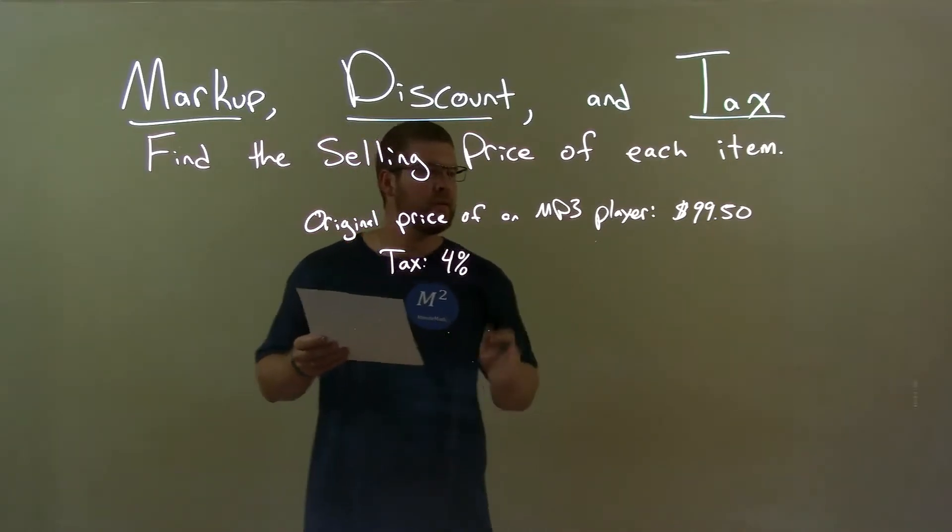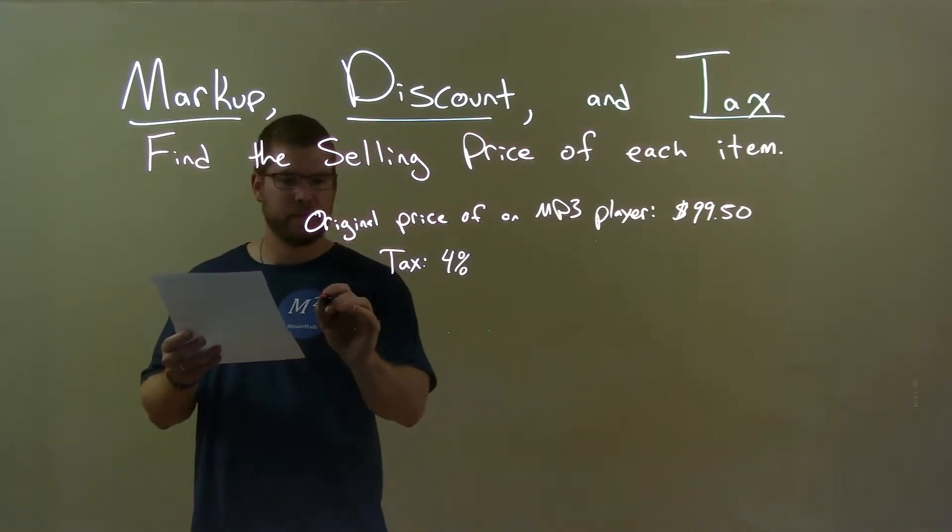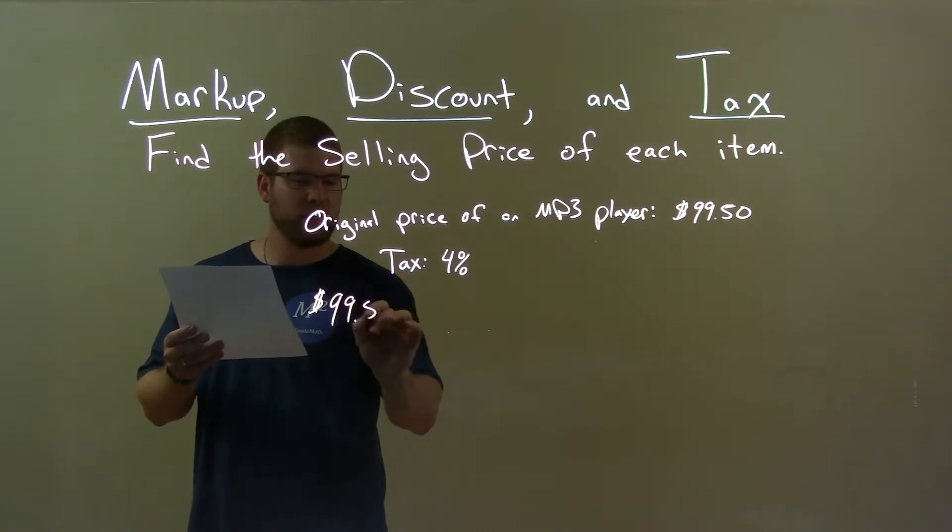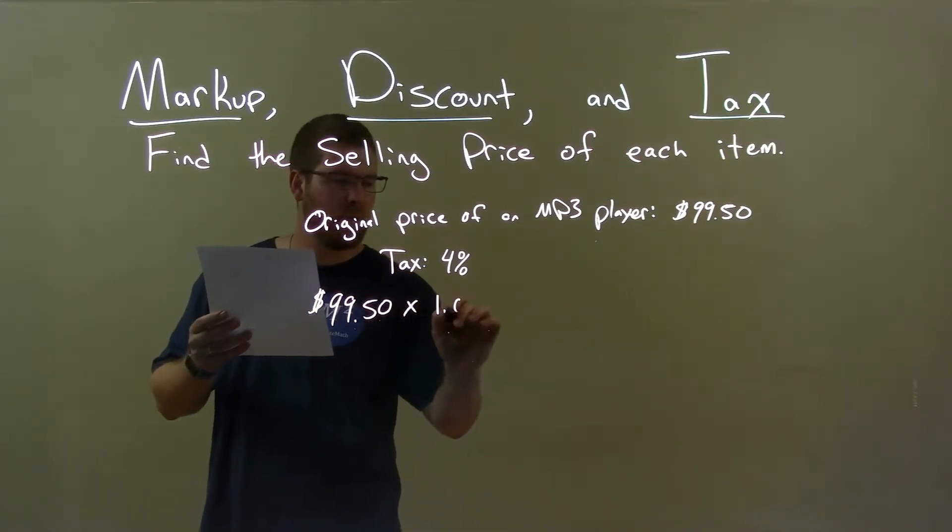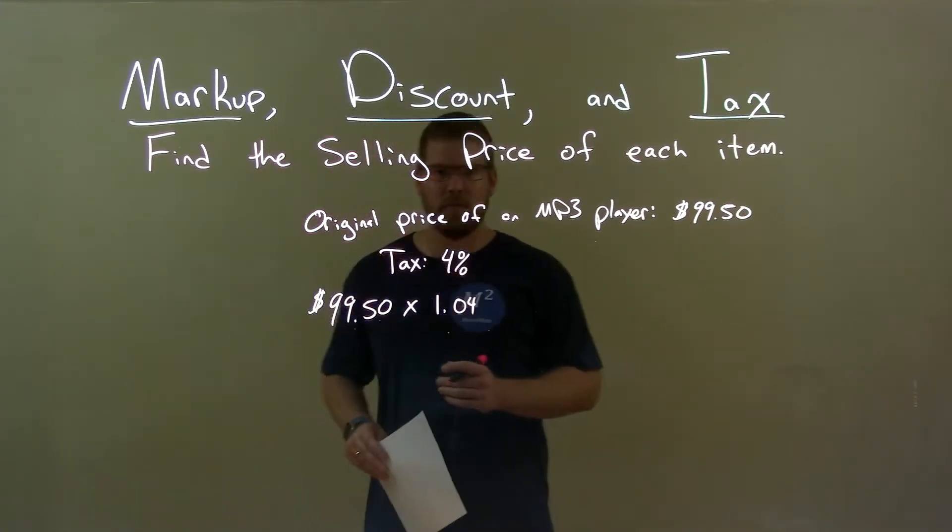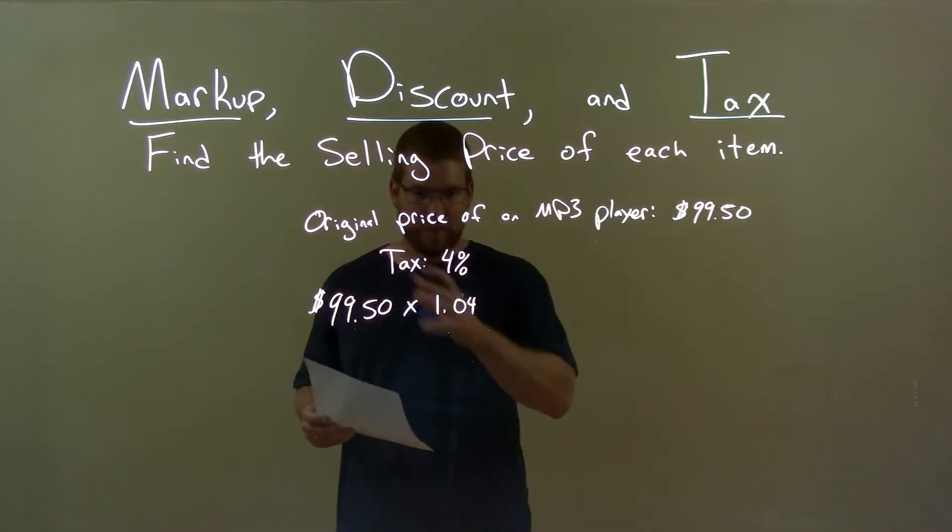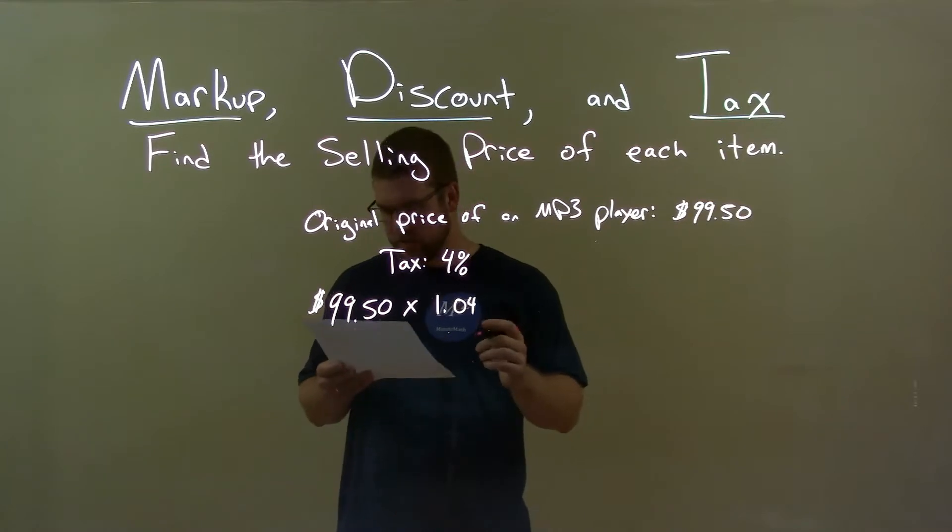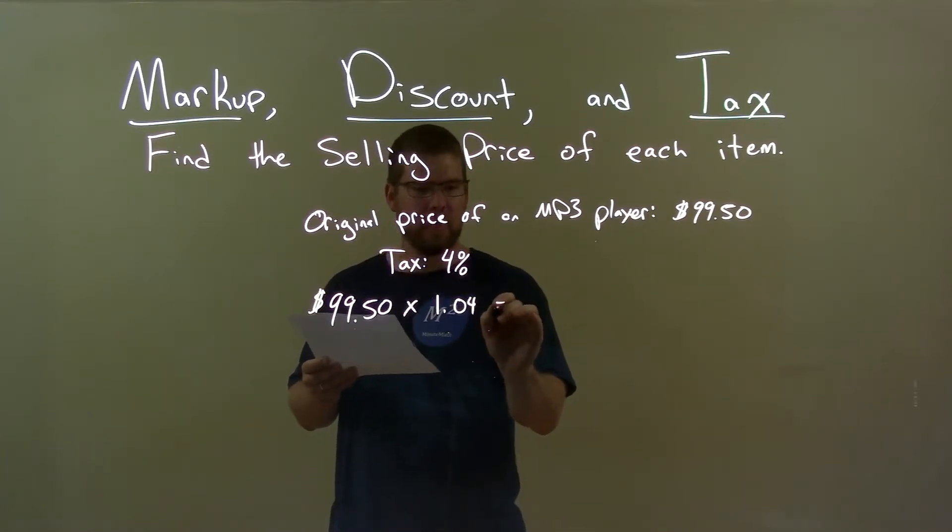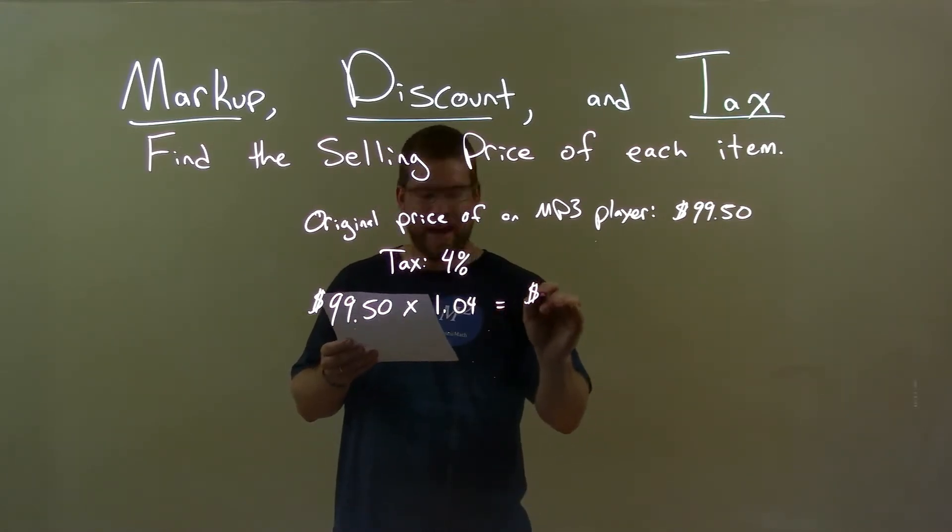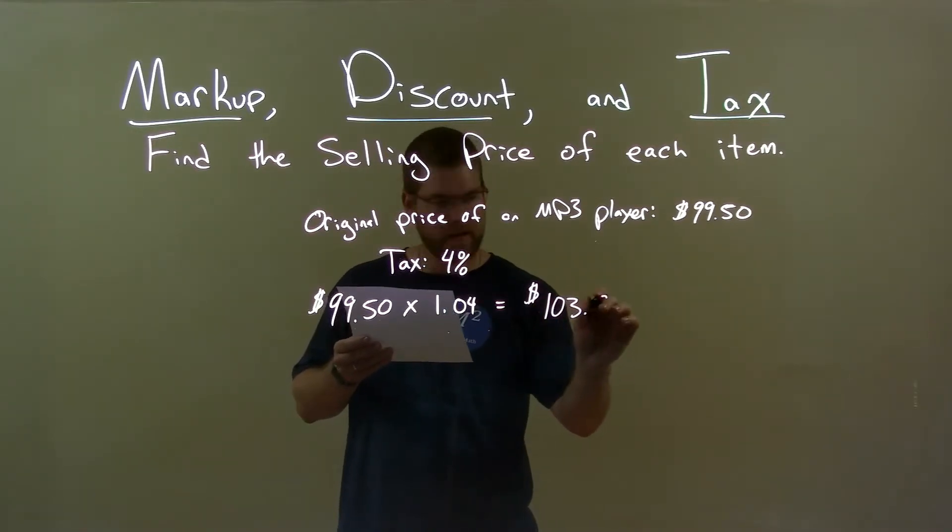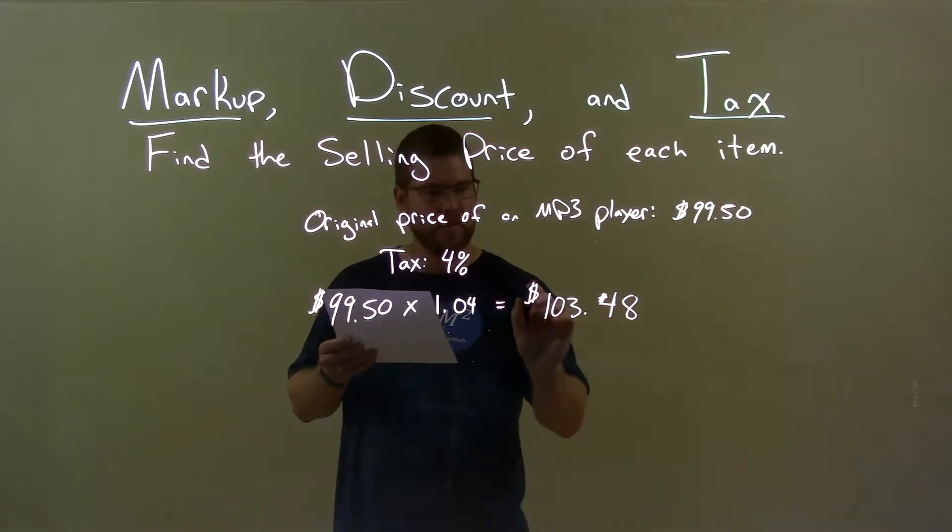Okay, so what we need to do, we take the original price of $99.50. We're going to multiply that by 1.04. 0.04 represents the 4%, and the 1 represents the original cost. Make sure we factor in the original price. So in doing so, we get a final price after taxes of $103.48.